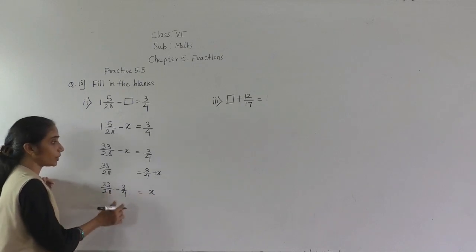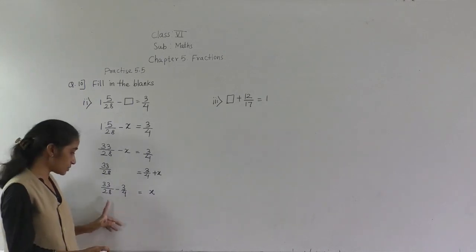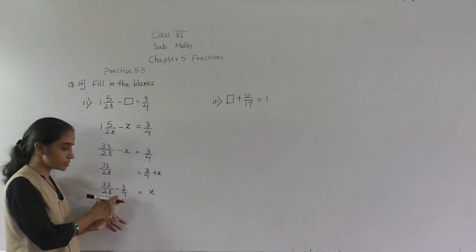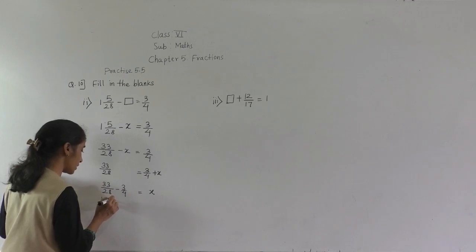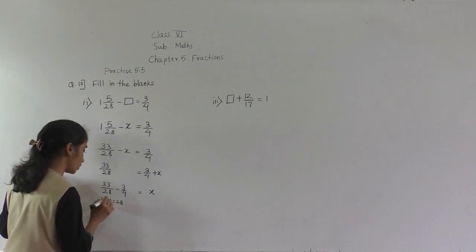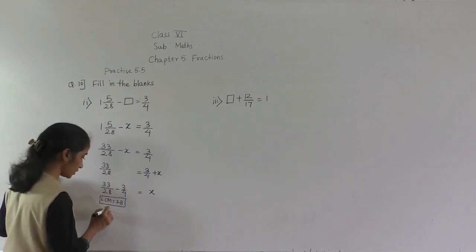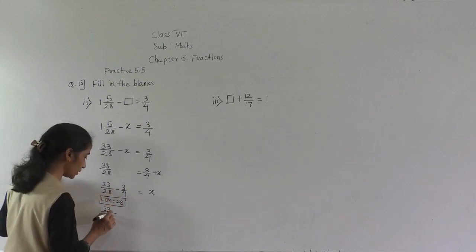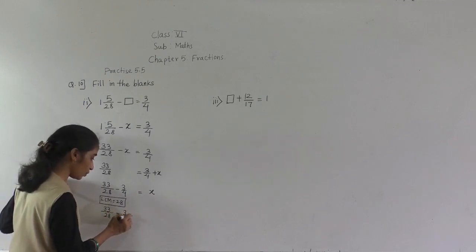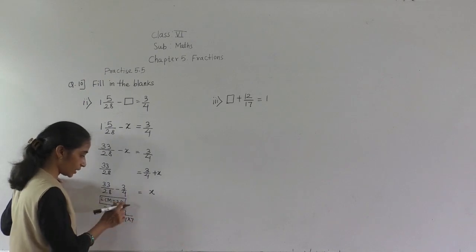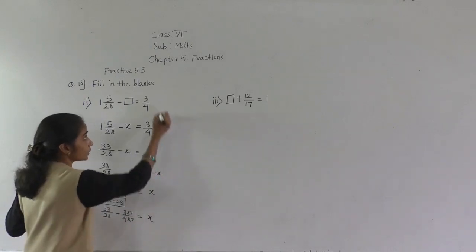If you observe, the denominators are not the same, so we need to make them the same. For that, what will be the LCM? The greater denominator is 28. Is 28 in the 4 times table? Yes — 4 sevens are 28. So the LCM is 28. We have to make the denominator 28. 33 upon 28 already has denominator 28. Minus 3 upon 4 — 4 sevens are 28, so for the numerator also multiply by 7.